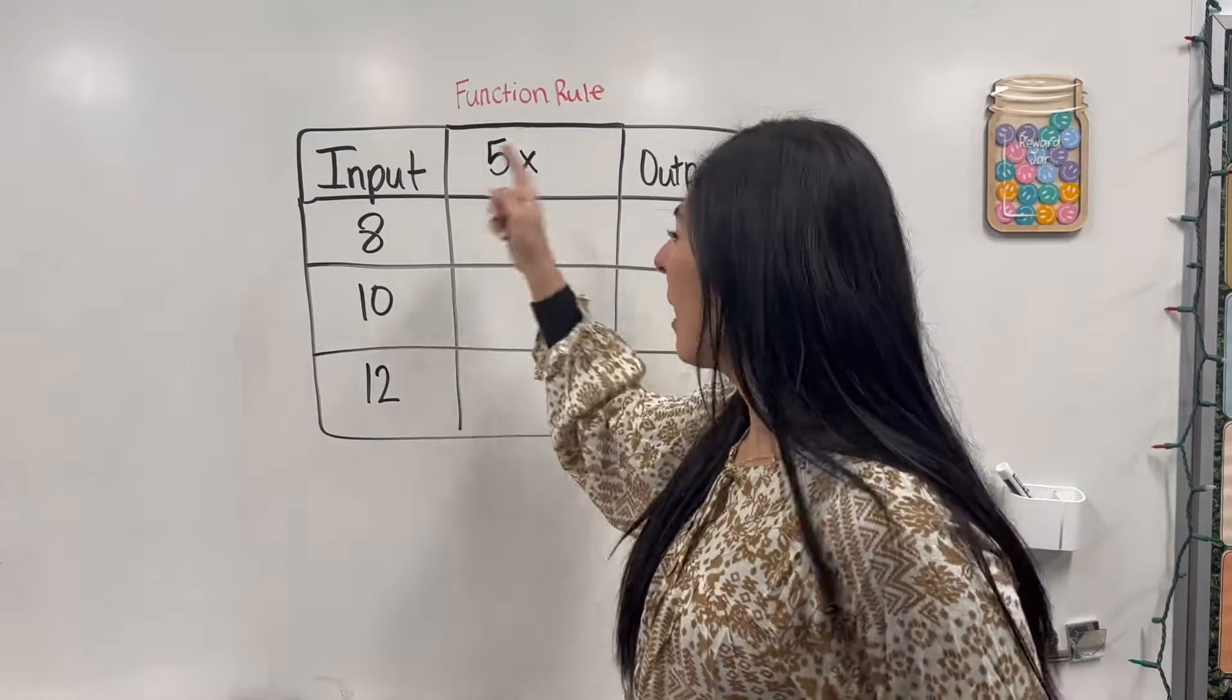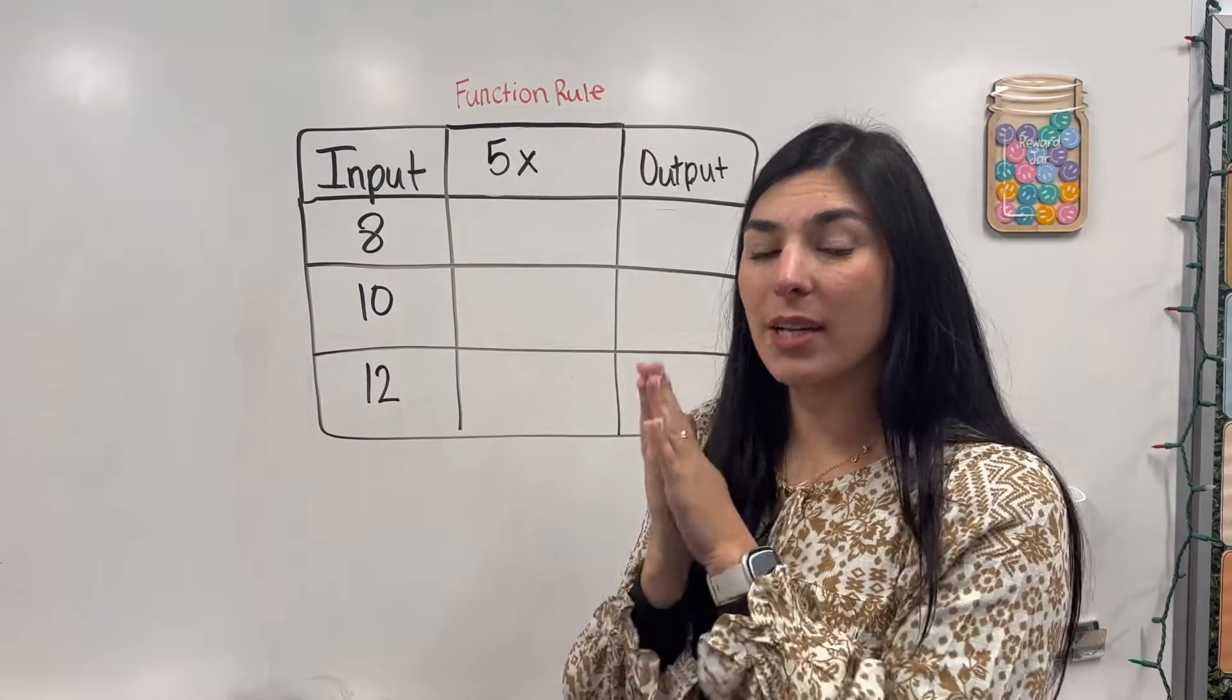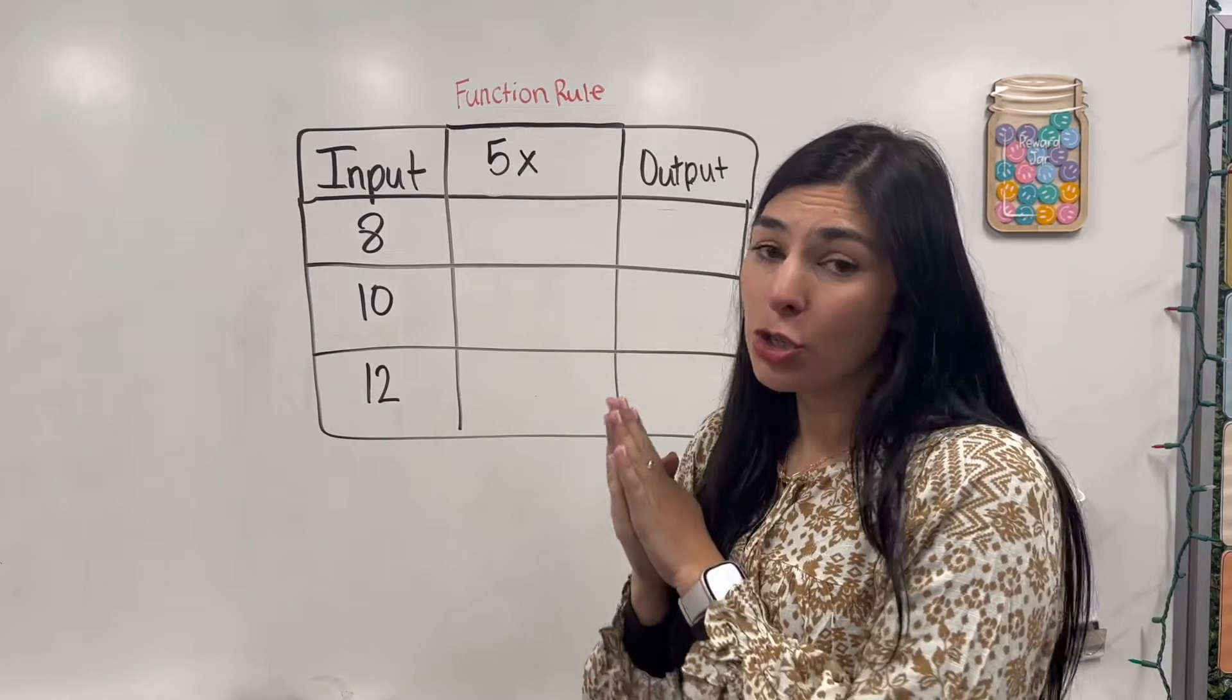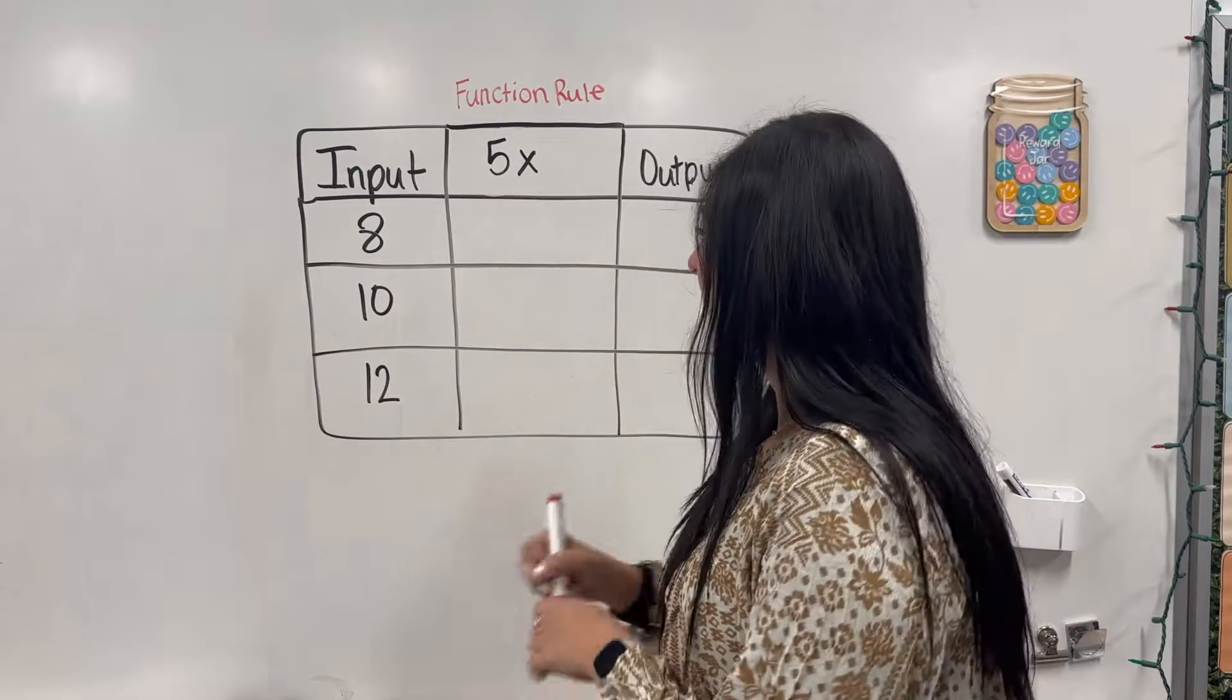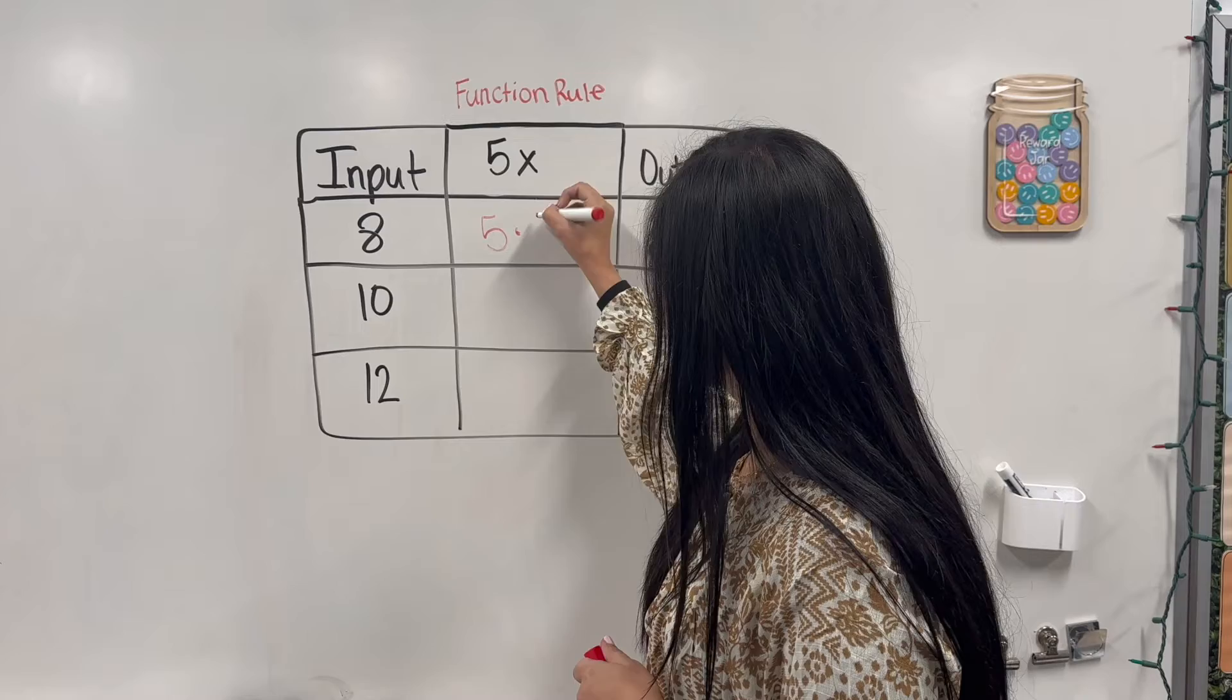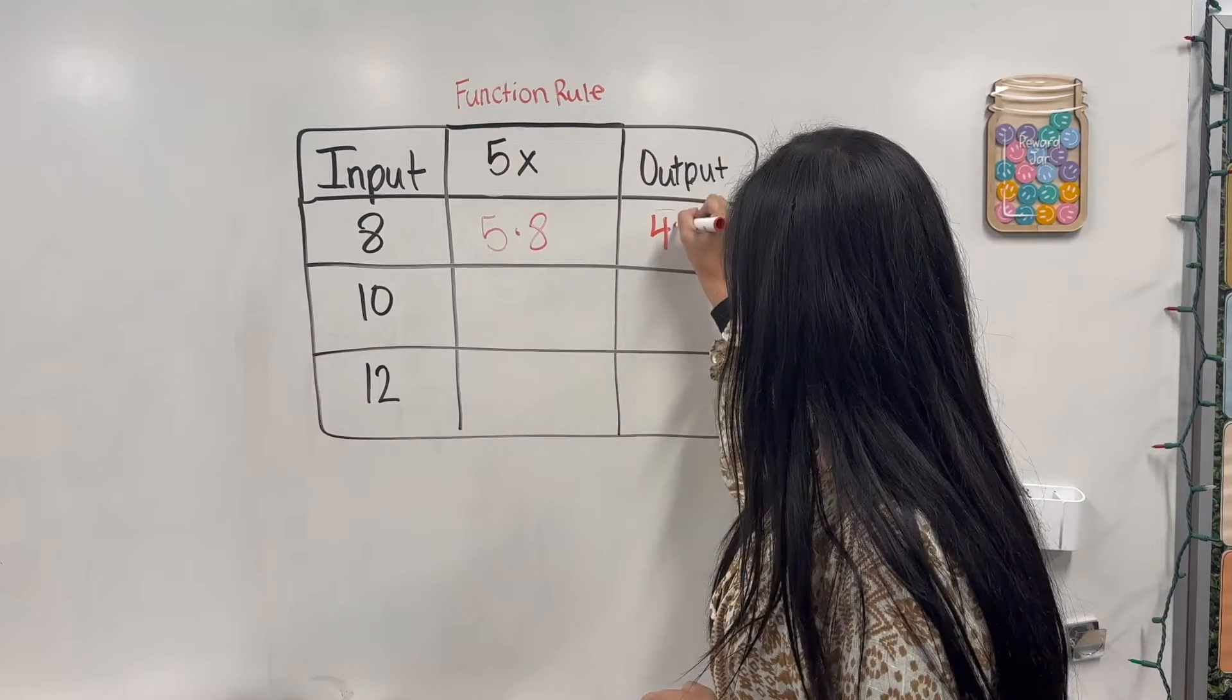Okay, next one. We have our input and our new function rule is going to be 5x. Remember, when the number and the variable are right next to each other, that means multiplication. So we're going to plug in our variable and multiply that times 5. So I have 5 times 8. 5 times 8, that's going to be 40.